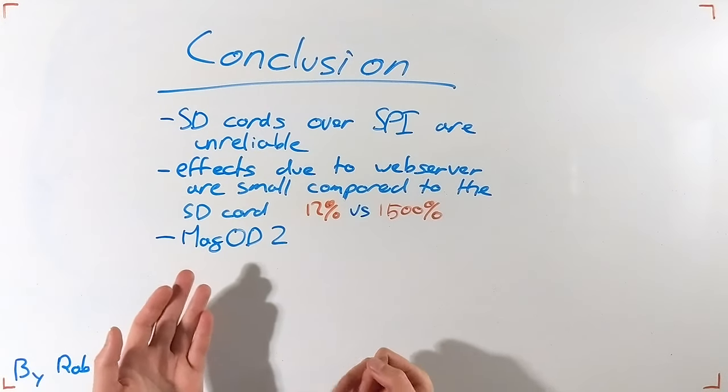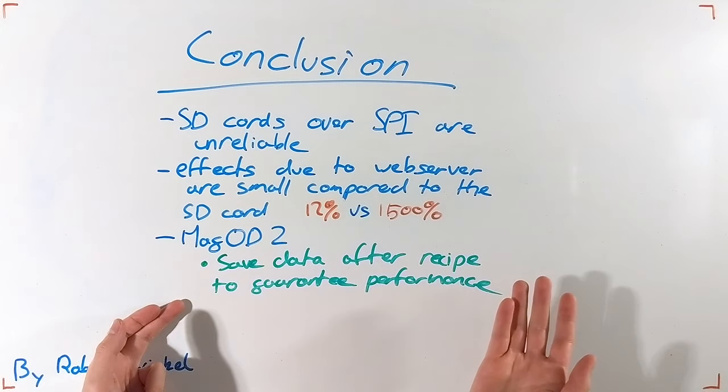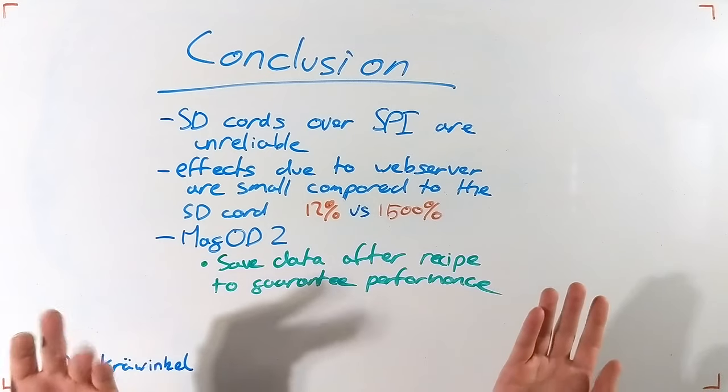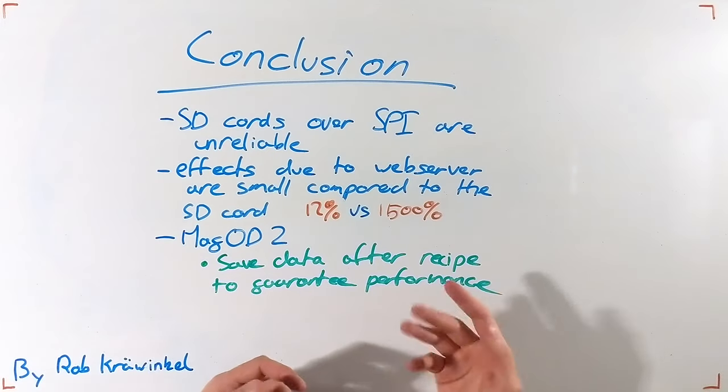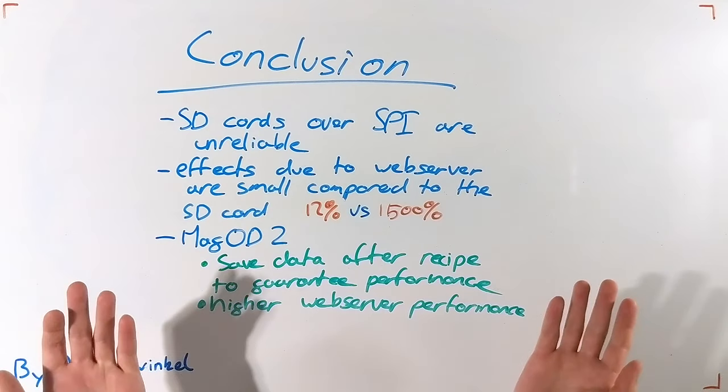Regarding the MAGO-D2 system, the data should no longer be saved during your measurement, but rather after a recipe is completed. This is the only way a consistent performance can be guaranteed. Also, if the SD card is no longer being used regularly, this opens up room for the web server to attain higher speeds running on a secondary core.